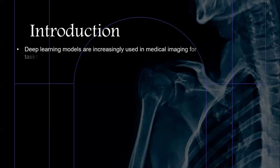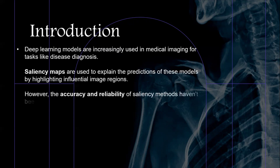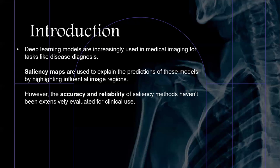Deep learning has become a powerful tool in medical imaging, aiding in tasks such as detection and classification. Saliency maps are visual representations that aim to explain the rationale behind a model's predictions by highlighting the image regions that most influence the outcome. While saliency maps hold promise for improved explainability in healthcare, their effectiveness in real-world clinical settings needs careful evaluation.